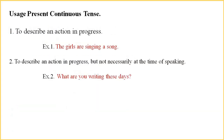We use the fourth form of the verb — that means first form plus 'ing' — in present continuous tense. 'Is' is used for singular subject, 'are' is used for plural subject, and 'am' is used with 'I.' Present continuous tense is used to describe an action in progress, for example: 'The girls are singing a song.' It is also used for an action in progress but not necessarily at the time of speaking, for example: 'What are you writing these days?'